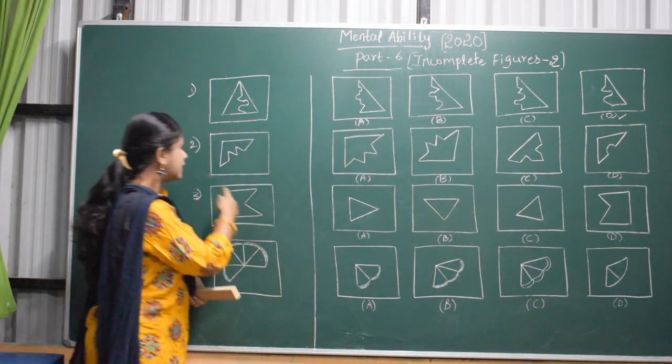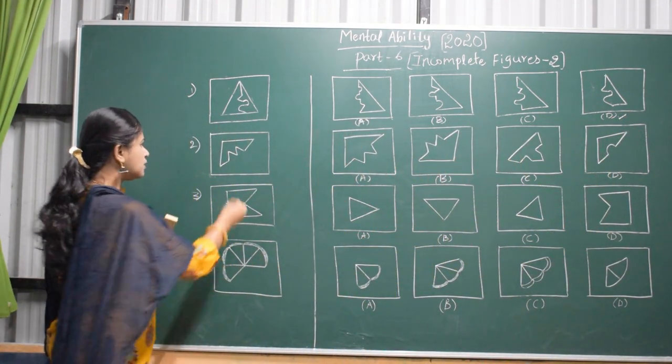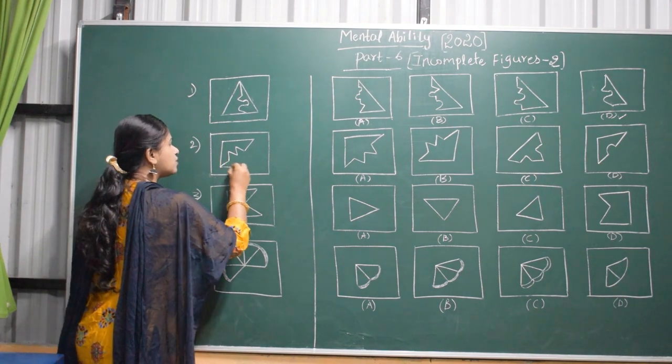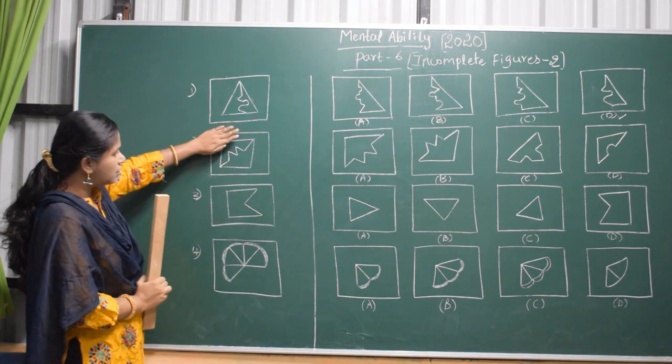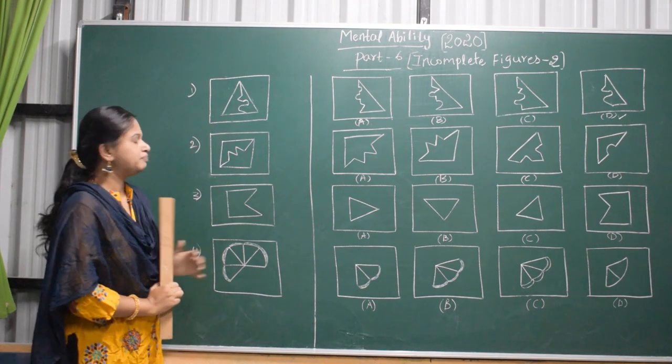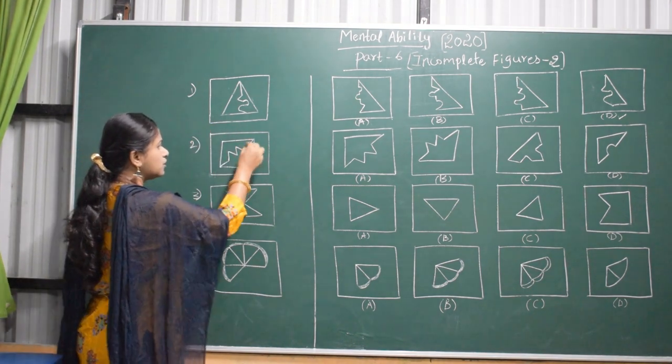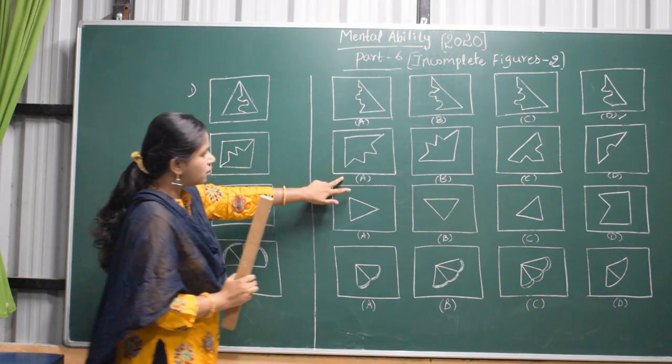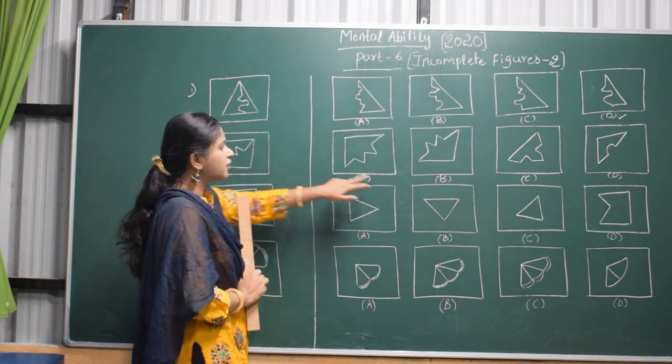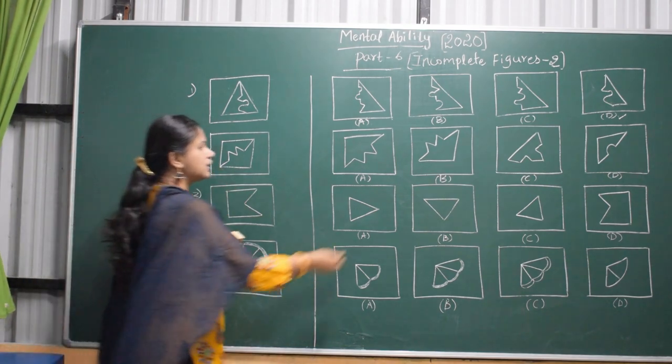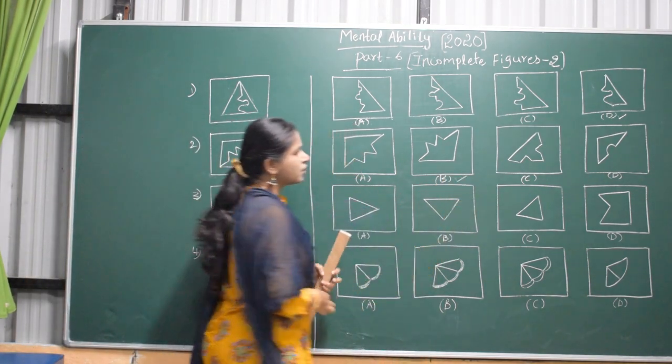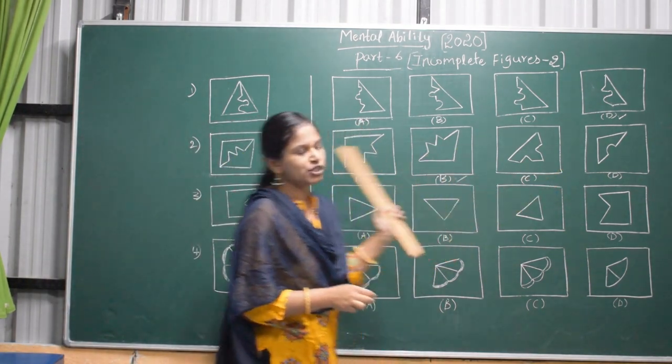Coming to the second question. You draw like this. Here also you draw. It may be easy for you. You draw like this and observe the answer. Here, this shape will come in the first figure—it will not come. In the second figure, yes, it is matching. So you select B as the answer. Third and fourth are not matching into this.